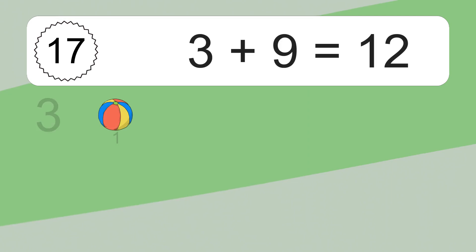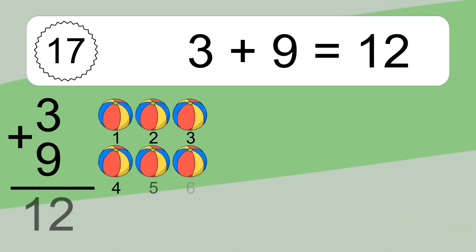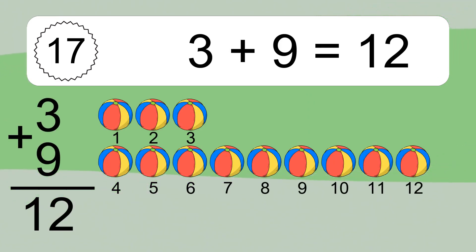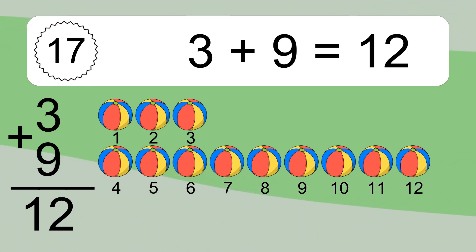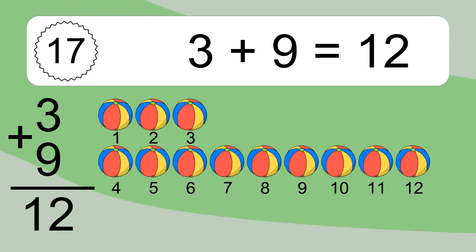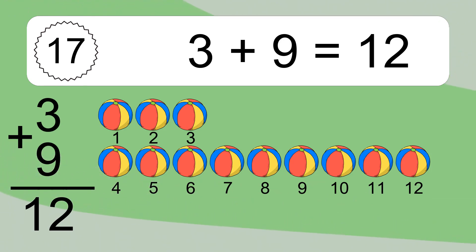3 plus 9 equals what? 3 plus 9 equals 12. Let's count it: 1, 2, 3, 4, 5, 6, 7, 8, 9, 10, 11, 12.